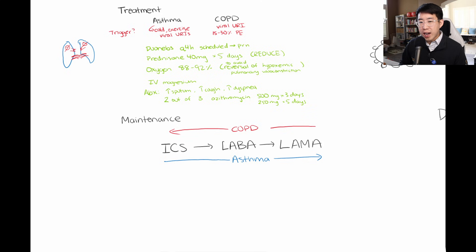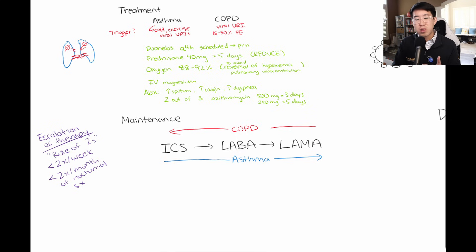So how do you know when to escalate therapy in a patient with asthma? So what you really want to pay attention to is the rule of twos. And the rule of twos is that you want your patients to be using their rescue inhaler less than two times a week, and they should be having less than two times a month of nocturnal symptoms. If your patient is using their rescue inhaler more frequently than that, or having nocturnal symptoms more than twice a month, then the patient should be stepped up in terms of their therapy.